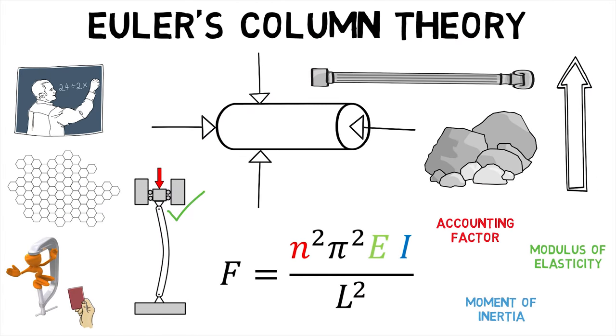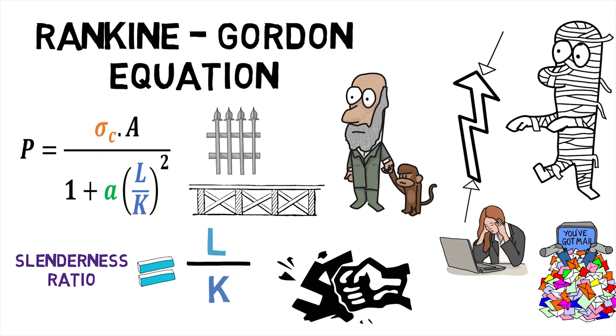Hence, we first saw what Euler's Column Theory is and then went on to see what Rankine-Gordon formula is.